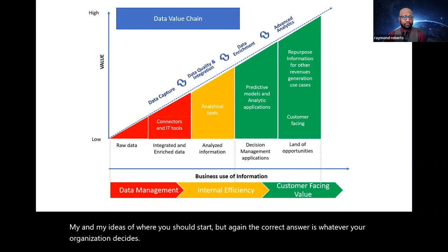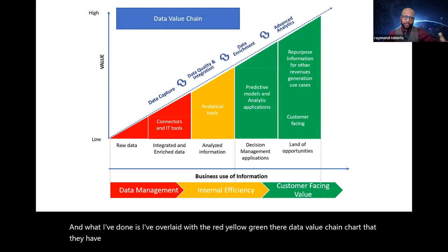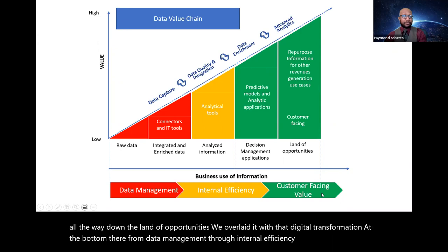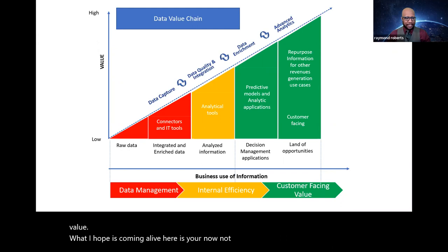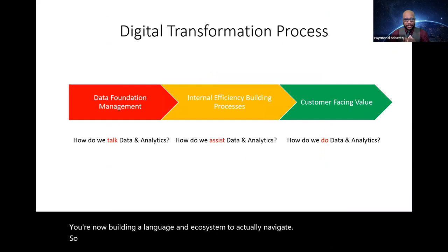This should be familiar. This is taken from a McKenzie Gartner. And what I've done is I've overlaid with the red, yellow, green, their data value chain chart that they have available. So we took the existing chart, going from raw data, integrated data, all the way down to land of opportunities, we overlaid it with that digital transformation at the bottom there from data management through internal efficiency to customer facing value. What I hope is coming alive here is you're now not just having charts and ideas and terms. You're now building a language, an ecosystem to actually navigate.